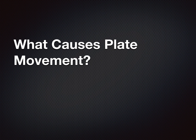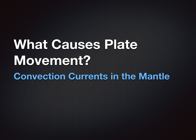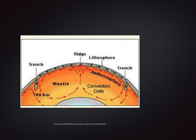What causes plate movements is the third thing on your notes. This is a review from the Layers of the Earth Unit. It's the convection currents within the mantle. When that hot air rises and that cool air falls within a liquid, especially in the mantle as shown here, it will move the plates that float above it. The mantle is liquid rock and the plates are solid rock. So as the liquid's moving, it can move the rocks on top of it, which is plate movement.